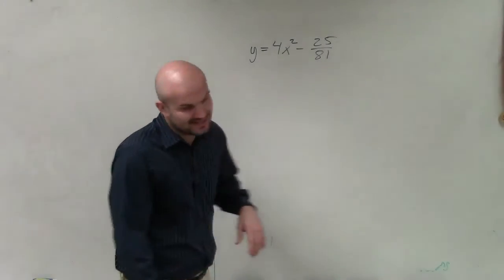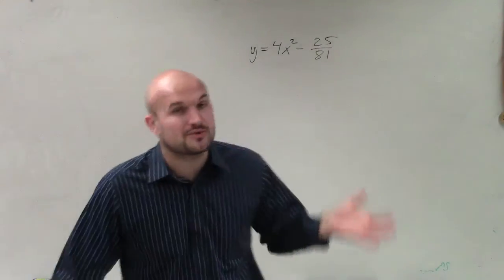Welcome. All right, so here we go. What I have in this case is 0 equals 4x squared minus 25 over 81.